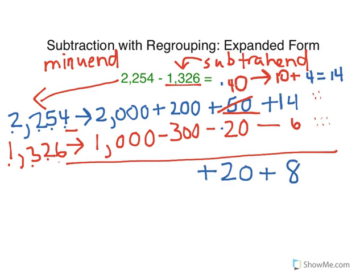Now we're in the hundreds place, or the hundreds column. 200 minus 300. Well, I can't do that because 300 is larger than 200. So we're going to have to borrow again. I'm going to go to the column to the left of the hundreds place, which is the thousands place right here.